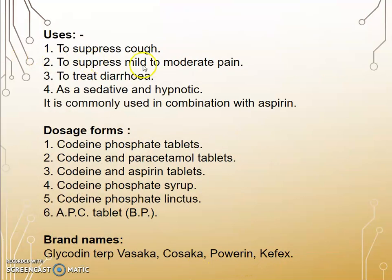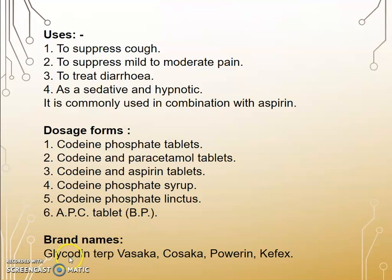Uses: Codeine is used to suppress cough, to relieve mild to moderate pain, to treat diarrhea, as a sedative and hypnotic, and is more commonly used in combination with aspirin. Dosage forms: Codeine phosphate tablet, Codeine and Paracetamol tablet, Codeine and Aspirin tablet, Codeine sulfate syrup, Codeine phosphate linctus, and APC tablet BP. Brand names: Glycodine, Terbosaka, Cosaka, Powerine, and Capex.